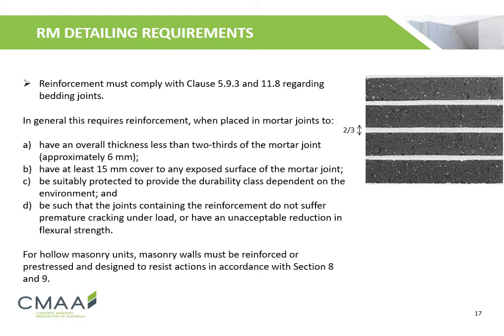In general, the reinforcement must have an overall thickness less than two thirds of the mortar joint (approximately six millimeters), have at least 15 mm of cover to any exposed surface of the mortar joint, be suitably protected to provide the durability class dependent on the environment, and be such that joints containing the reinforcement do not suffer premature cracking or an unacceptable reduction in flexural strength. For hollow masonry units, masonry walls must be reinforced or pre-stressed and designed to resist actions in accordance with sections 8 and 9 of AS3700.